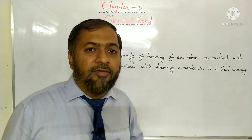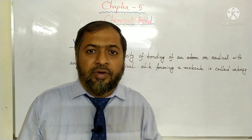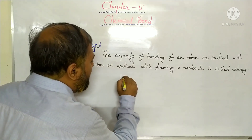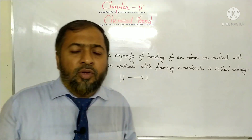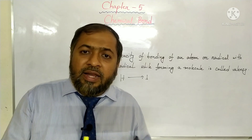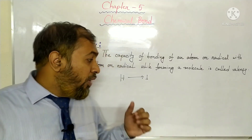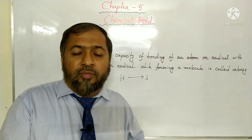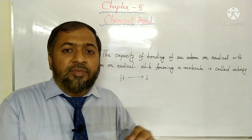Valence is the capacity or ability of an atom or radical. We consider the valence of hydrogen is 1. From here we can find out the valence of other elements by observing the molecule where hydrogen is present. The number of hydrogen atoms present while forming a compound with another atom is the valence of that particular atom.